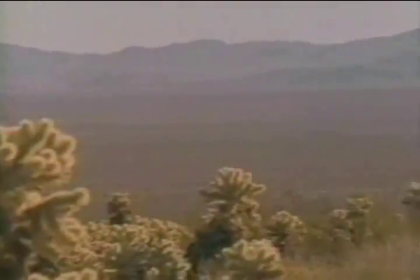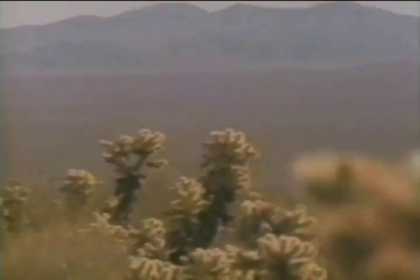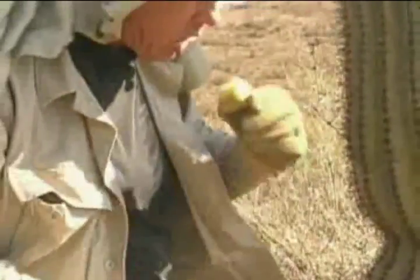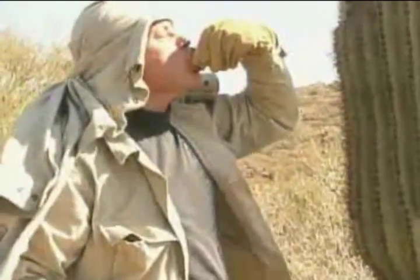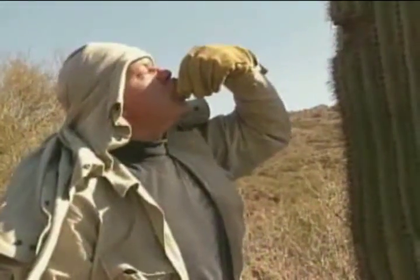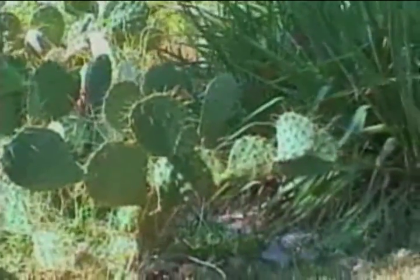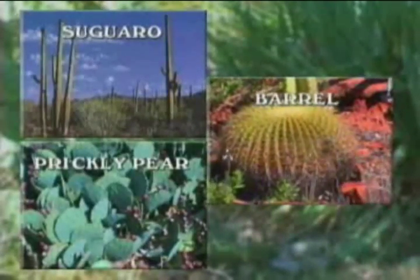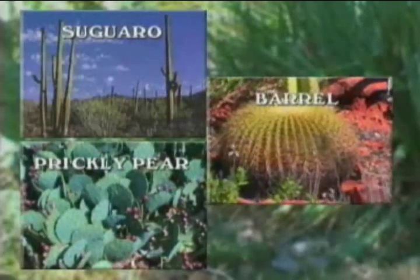Cactus will provide water in amounts sufficient enough to sustain life in a dry land situation. Contrary to popular belief, cacti will not yield flowing water — moisture must be sucked from the meat of the plant. However, an exceptional amount of fluid is held within cactus plants. There are many varieties of cacti. Those producing the greatest amounts of moisture for consumption are the saguaro, beryl, and prickly pear, which are also the most prolific.